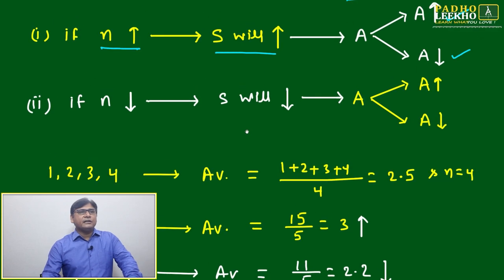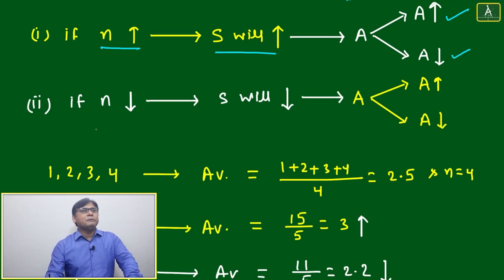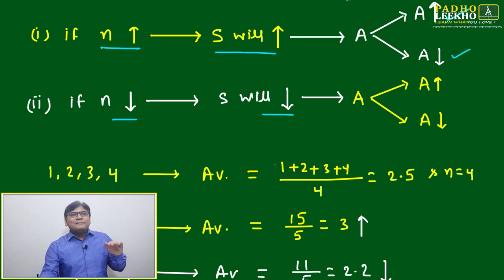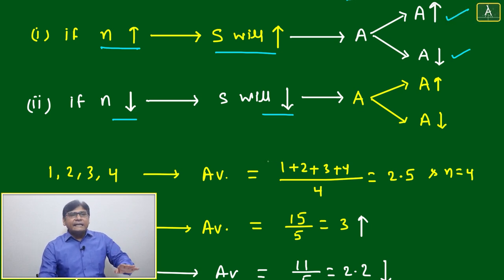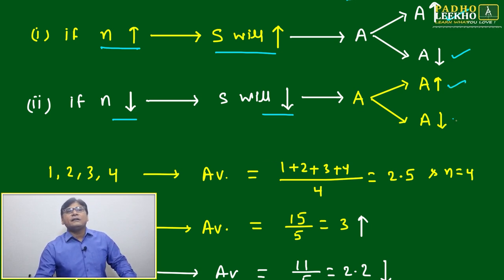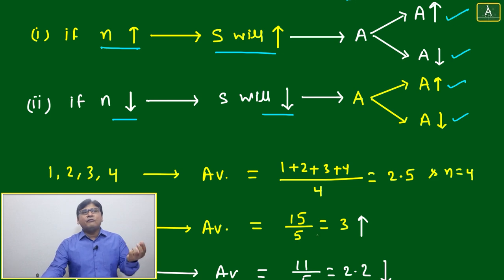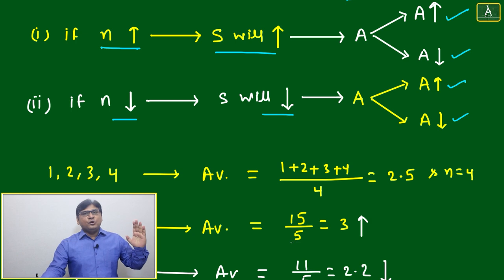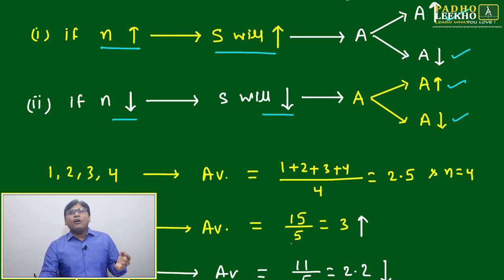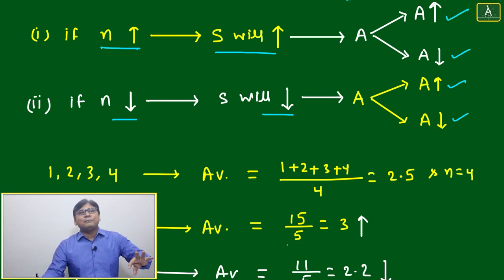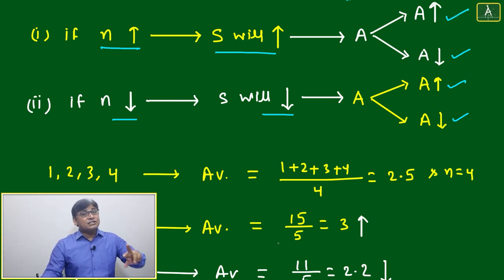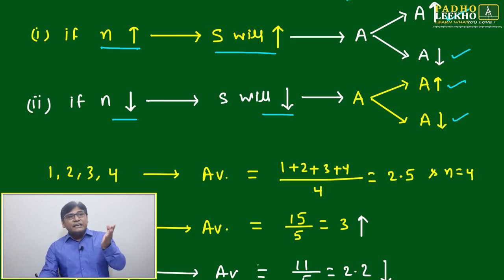We'll understand this with a diagrammatic and example-based approach. Now Case 2: if n is decreasing. If n decreases, then S will 100% decrease — no doubt. But again, with S decreasing and n decreasing, we are not sure whether average will increase or decrease. It depends on which data is going out — if the number going out is less than the average, the overall average will change differently.